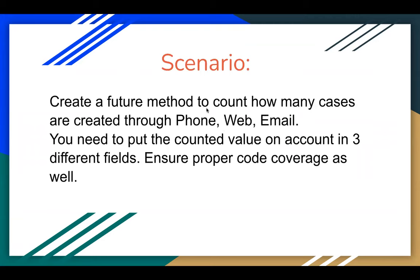We need to create a future method to count how many cases are created through phone, web, and email. These are basically picklist values available on case — the picklist value name is case origin. We need to put the counted value on account in three different fields. These three fields you need to create on account, so that counted values will be available under those fields with the help of the future method. After implementation, we need to ensure proper code coverage as well.